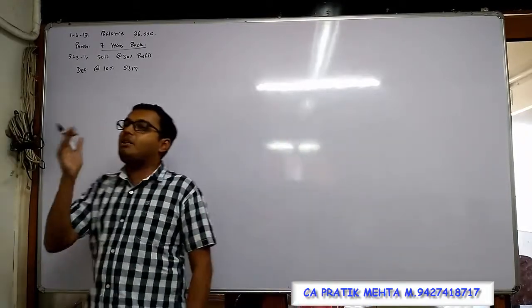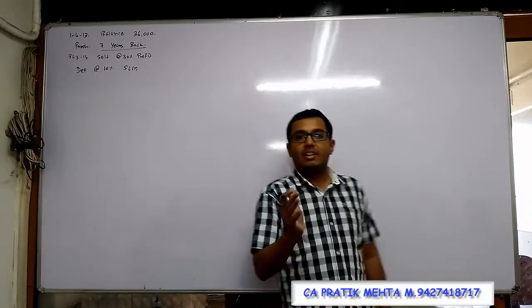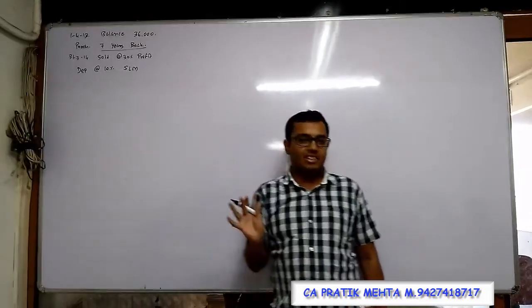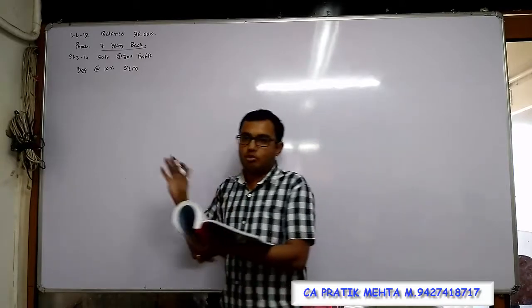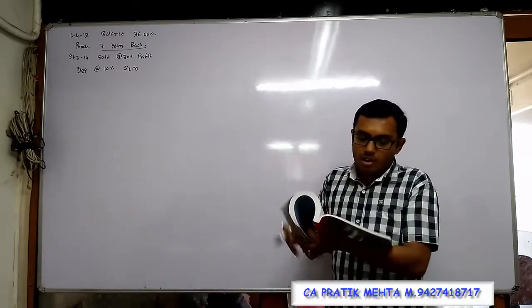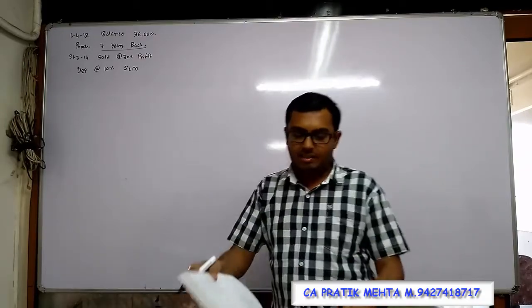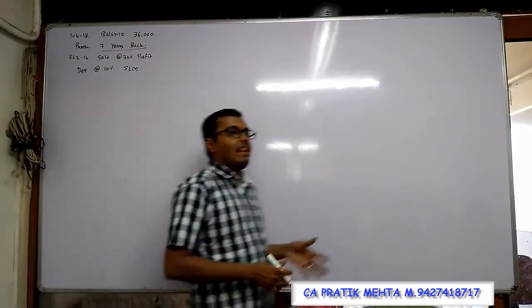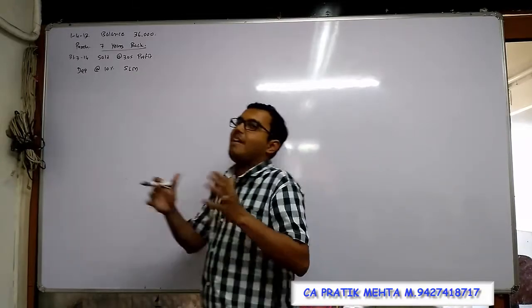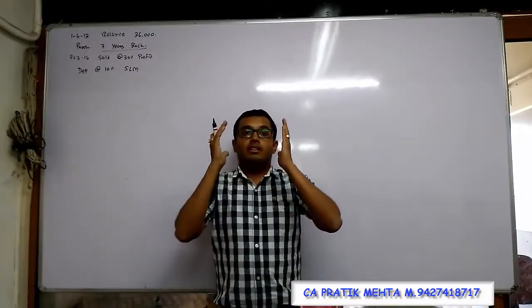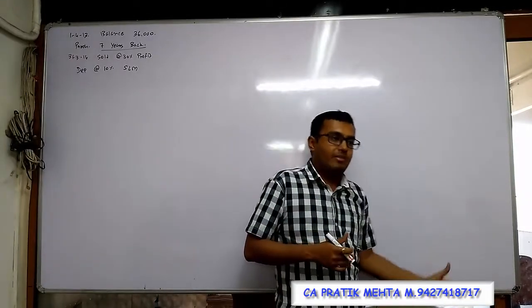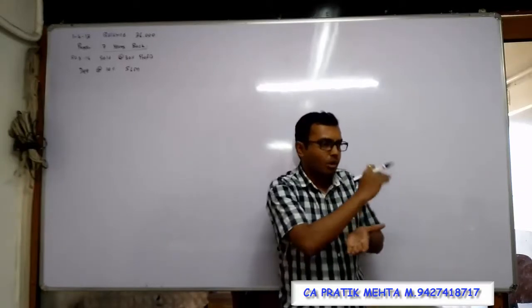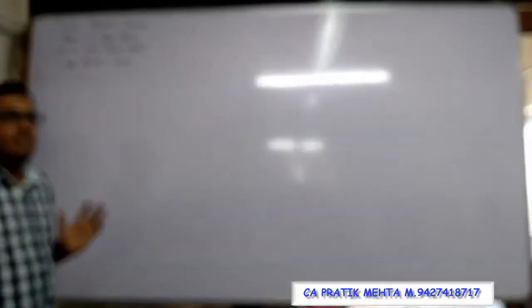Do you all remember what we mean by reducing balance method? Jo dekhta hai uspe depreciation apply karo - whatever you see, apply depreciation on that. But here right now we are supposed to handle this example by straight line method. From the above information, pass necessary journal entries and prepare machinery account. As discussed in the previous session, this chapter and all examples are divided into two parts. First part will be calculation and second part will be accounting treatment - journal entry, ledger account, final account, whatever is asked.